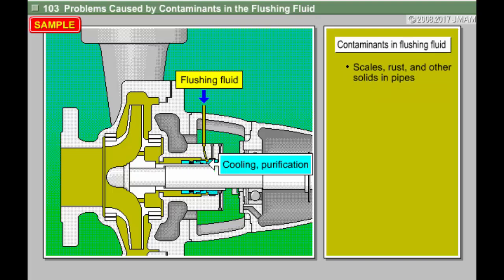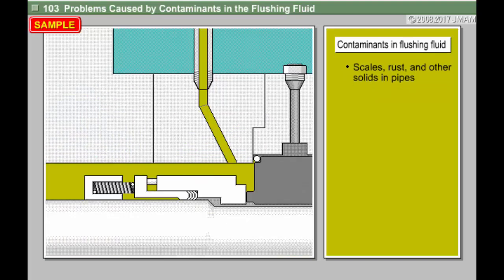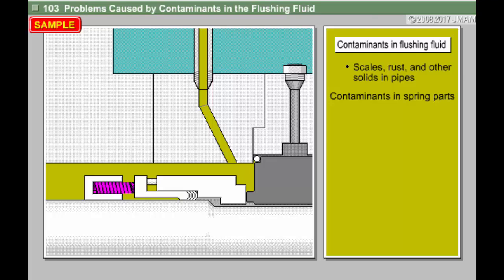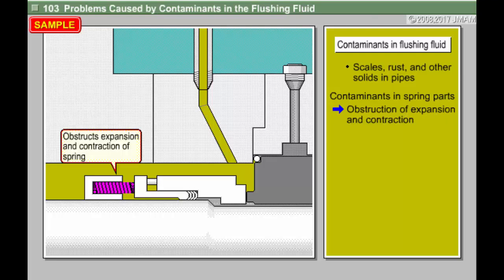A mechanical seal uses the force of a spring to make the rotating ring follow the movement of the shaft in the thrust direction. If sediment accumulates there, it becomes difficult for the spring to expand and contract.